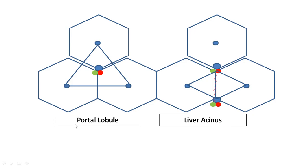The portal lobule, as the name suggests, consists of the portal triad at its center. This triangular structure has each of its corners occupied by a central vein. It is called the portal lobule since the portal triad is in the center. This is actually an excretory unit of the liver — hepatocytes from each surrounding hepatic lobule drain bile towards the central bile ductule.